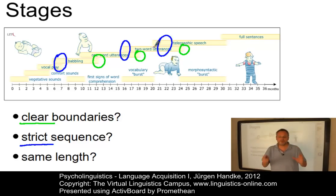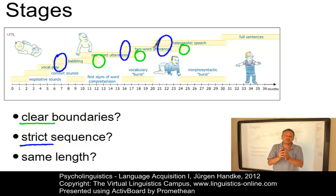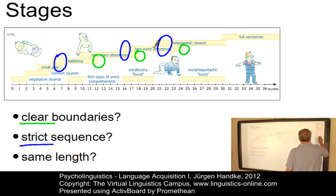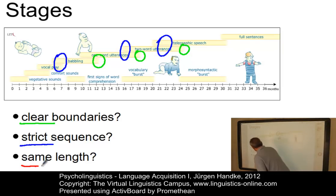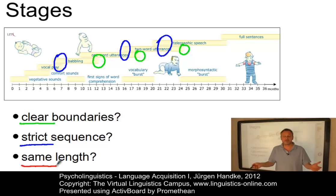While normal children pass through all of these stages, individual stages can be stretched out or compressed to a different extent for different children. In other words, these stages are different in length as far as individual children are concerned. The diagram, however, generalizes over such individual differences.